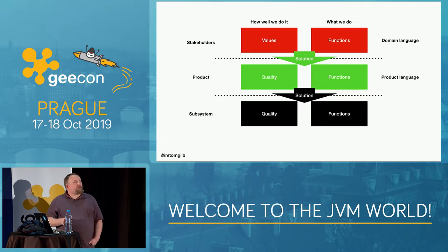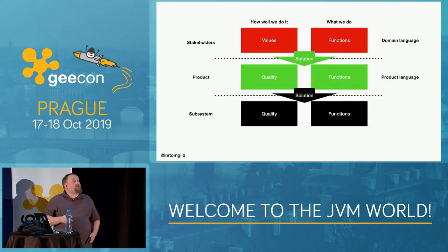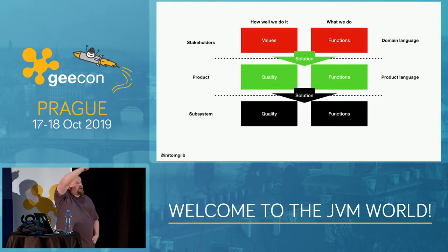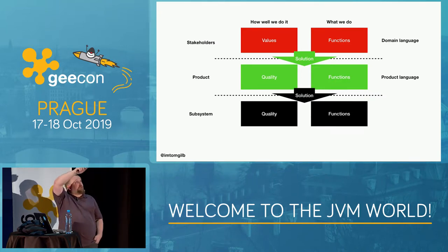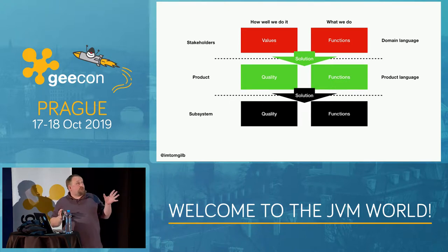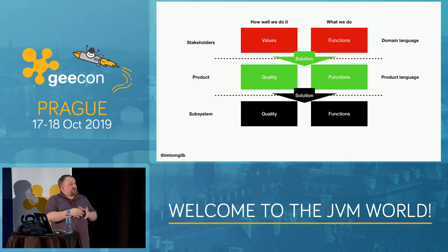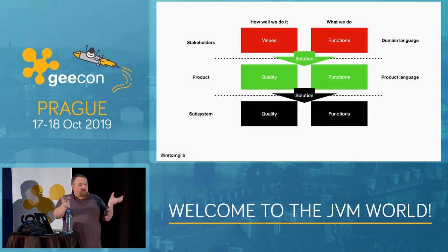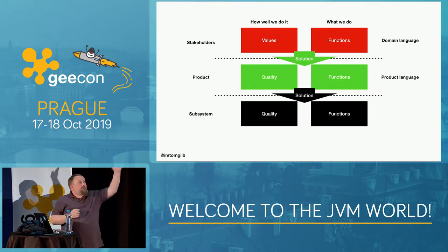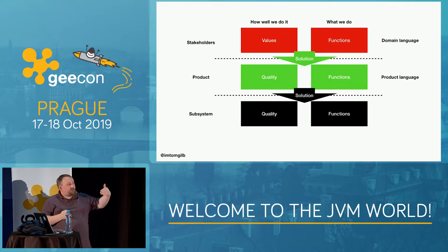Those are the stakeholders — who you should listen to and how. Here you can see a very interesting way of analyzing the information you hear from them, which gives the whole picture. It has three layers: the stakeholder layer — what you hear; the product layer — what you make of it in terms of your product, usually the domain of product managers; and the third layer — how we actually architect the system into subsystems, usually the domain of engineers and architects. So everything makes sense, starting with the values and functions of stakeholders and ending with a functioning system.